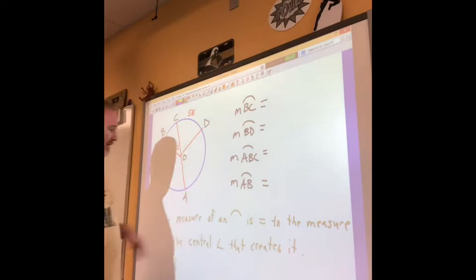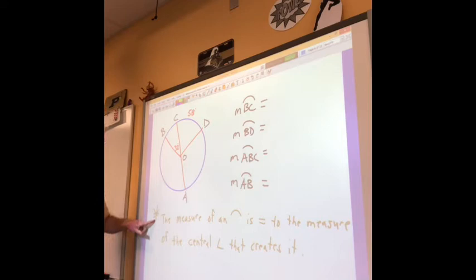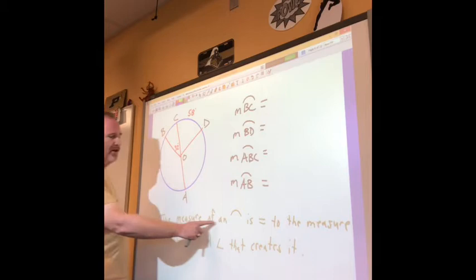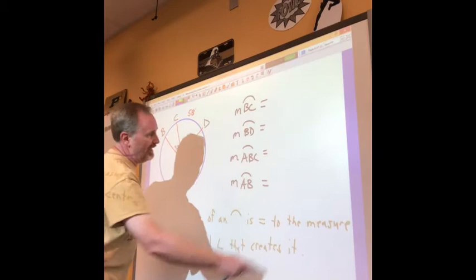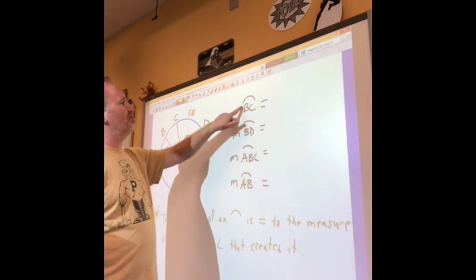But here's how you actually figure them out. Give you a chance to write this down. Again, pause if you need to. See this gold hairy asterisk here? It means it's an important hint, and it's telling you the measure of an arc is equal to the measure of the central angle that creates it.